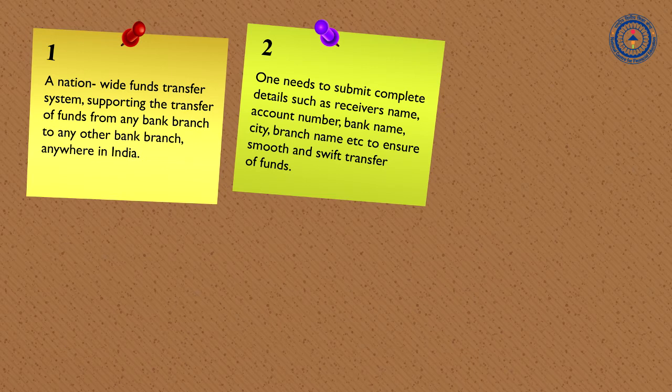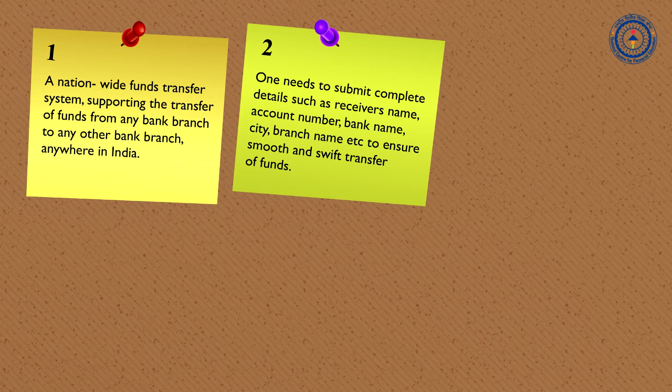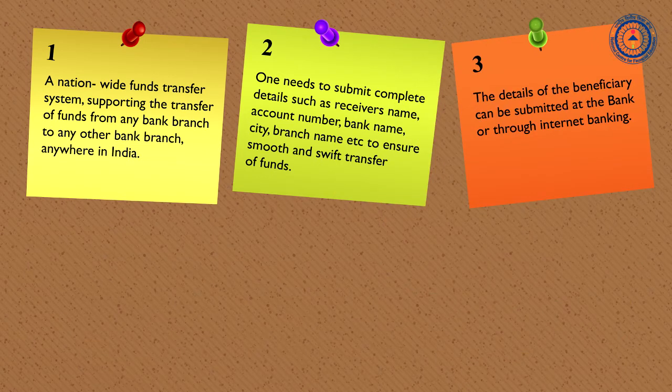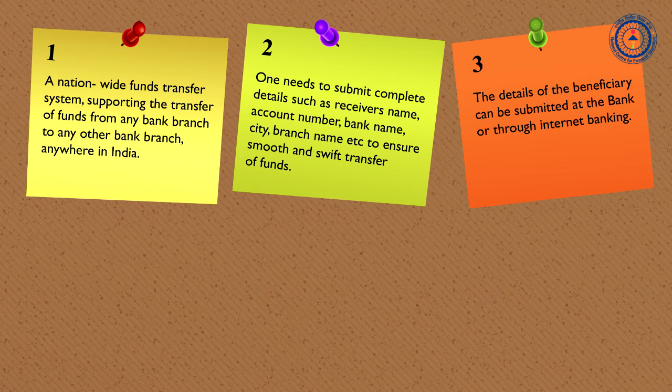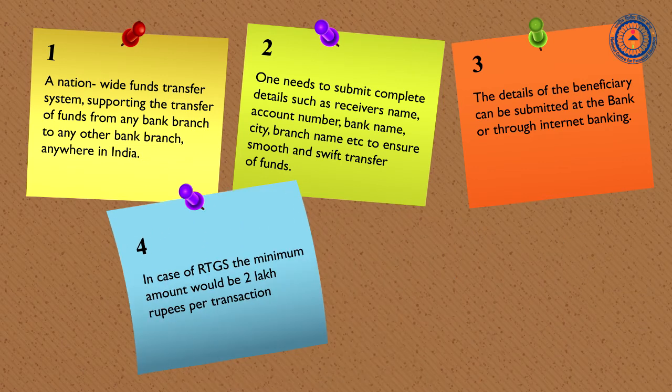One needs to submit complete details such as receiver's name, account number, bank name, city, branch name, etc. to ensure smooth and swift transfer of funds. The details of the beneficiary can be submitted at the bank or through internet banking. In case of RTGS, the minimum amount would be two lakh rupees per transaction.